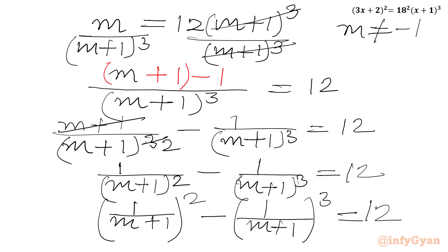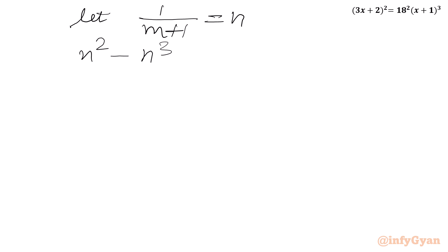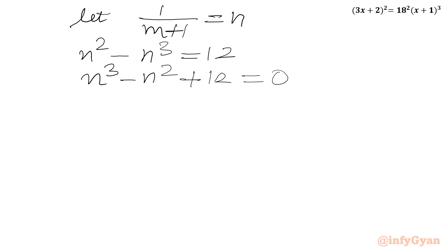Now I will assume 1/(m + 1) = n. So the cubic equation becomes n² - n³ = 12. Taking all terms to the RHS: n³ - n² + 12 = 0.